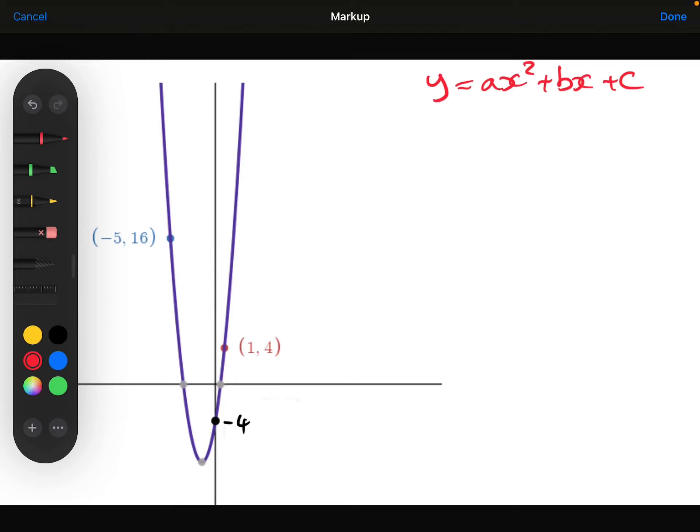With this quadratic, I've not been told the roots or a turning point, but I have been told the y-intercept, so I know that c is minus 4. So I'm going to start with that. I'm going to say that y equals ax squared plus bx minus 4.